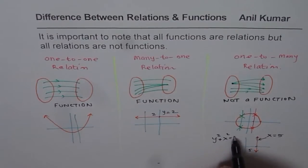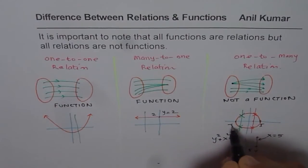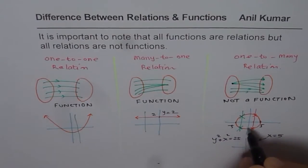Y square plus x square equals to 25, for example, represents a circle with radius 5. If I write this as 5, this as minus 5, then that could be the equation for a circle.